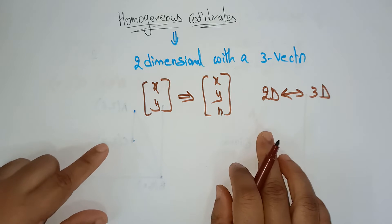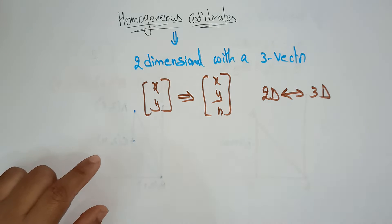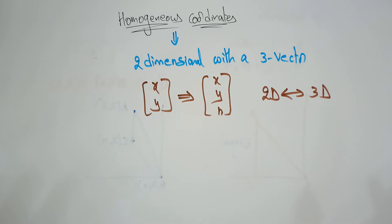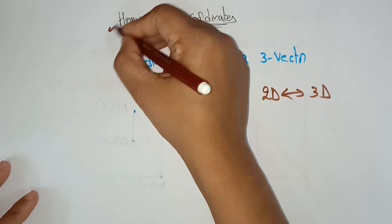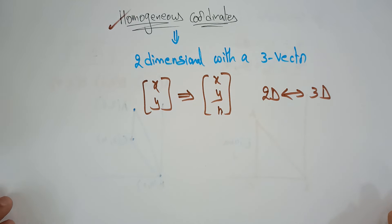If you change the 3D back into 2D, you get the same answer. With the help of homogeneous coordinates we are converting a 2D object into a 3D object. Homogeneous coordinates are generally used in design and construction applications — wherever you want to work on design and construction, we use homogeneous coordinates.